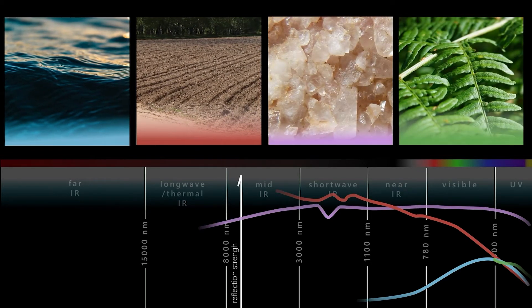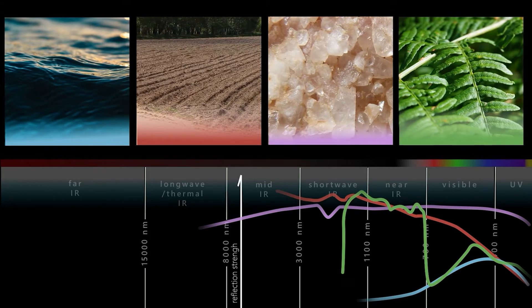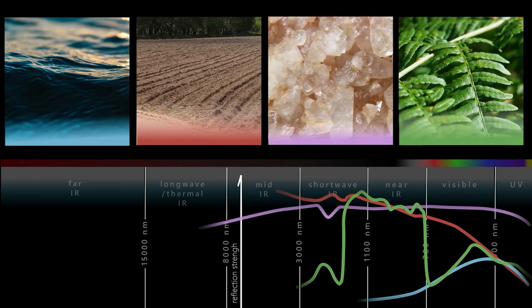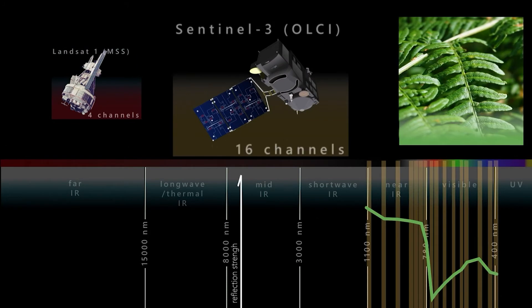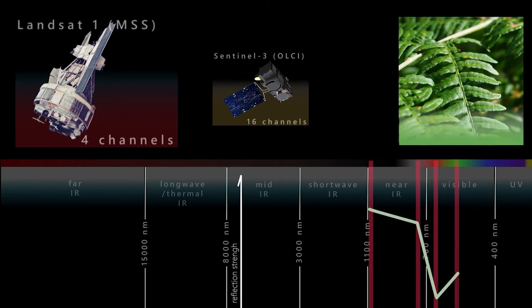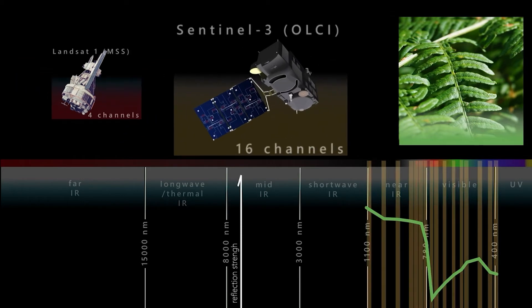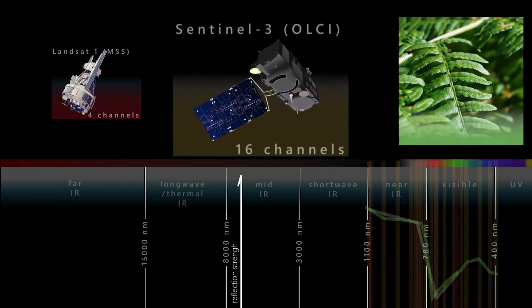We can distinguish objects from one another by looking at their reflection behavior. Sensors with more spectral channels allow us to see the spectral signature of an object with more precision. This also makes it easier for us to separate objects from one another.